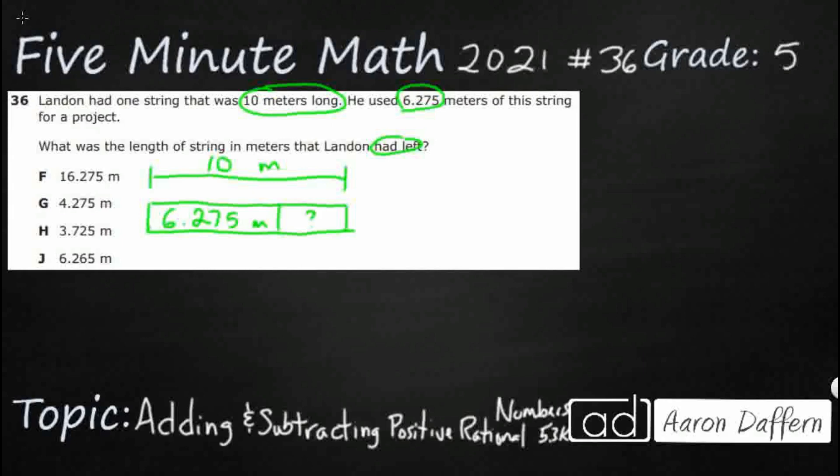That lets me know we are going to need to subtract, and it seems like, oh that is pretty simple. Well watch this, we need to line up the decimals, and that is our problem. We don't have any decimals. 6.275, that has got a decimal right there.